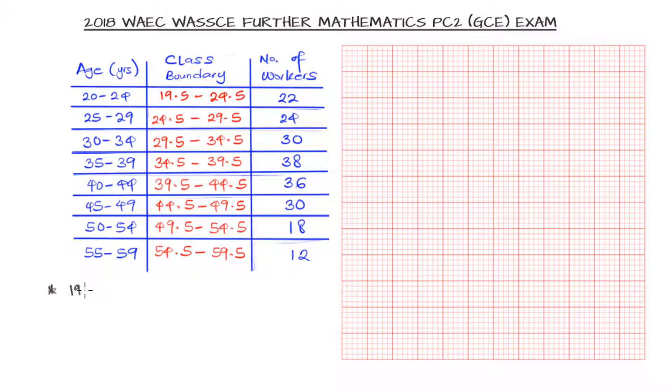Here we are bringing in our graph and we are noting that on the class boundary we are having 19.5 to 59.5 as the data that we need to put on the class boundary. And then for the workers we are noticing that 12 is the least but 38 is the highest number of workers when we group them by age. So we have 12 to 38 on the number of workers, which we also correspond to something like our frequency. Now I am noting this because I want to scale appropriately.